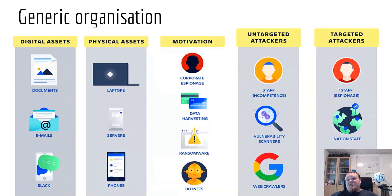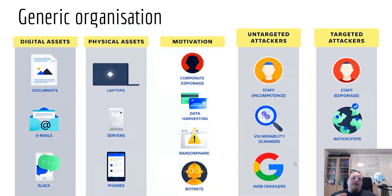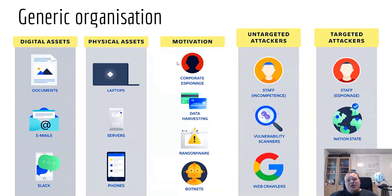We look at which threats to be aware of: untargeted attackers and targeted attackers — two different groups. The targeted ones include staff, espionage, nation state, and script kiddies. The untargeted ones include incompetent staff, vulnerability scanners, and web crawlers. We need to keep an eye on web crawlers because we don't always know what they're doing — sometimes a web crawler can trigger our intrusion detection or prevention system, or even a firewall, because it sends a lot of traffic that looks potentially malicious. The motivation could be corporate espionage, data harvesting, ransomware, and botnets.